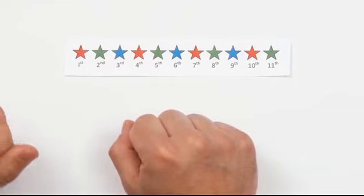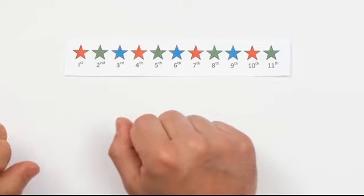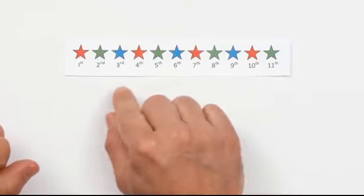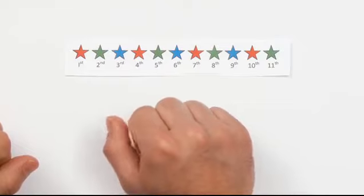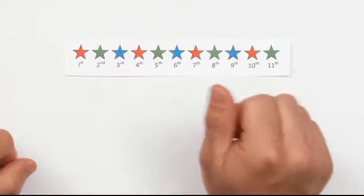We can look at the pattern, think about what is repeating, then use this information to make predictions about other stars in the pattern. There are three colors that repeat in a predictable way. The pattern goes red, green, blue, red, green, blue, red, green, blue, and so on.